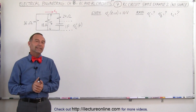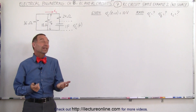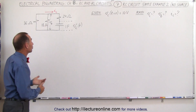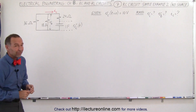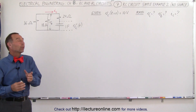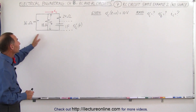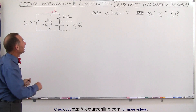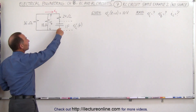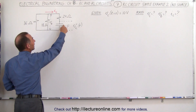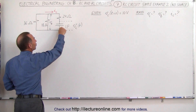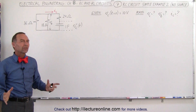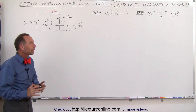Welcome to ElectronLine. Here's our second example of how to deal with an RC circuit. It's not a very simple one — it has three branches. It's different from the first example in that one of the branches that contains a capacitor also contains a resistor. How do we deal with that?